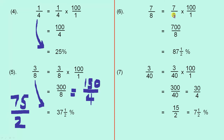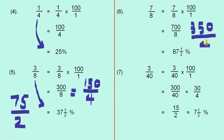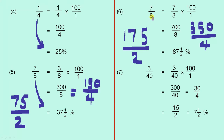Seven-eighths. Seven over eight times a hundred over one, which is seven hundred over eight. You just do the same trick — halve the seven hundred and halve the eight, that gives you three hundred and fifty over four. Then you halve each of those again, giving us a hundred and seventy-five over two. And half of a hundred and seventy-five is eighty-seven and a half. So seven-eighths is eighty-seven and a half percent.